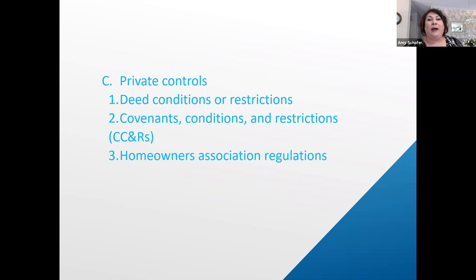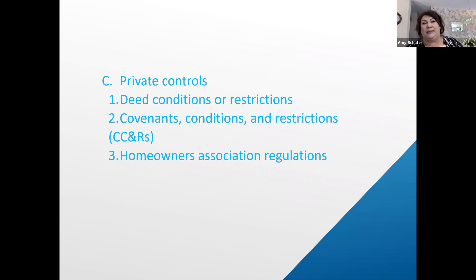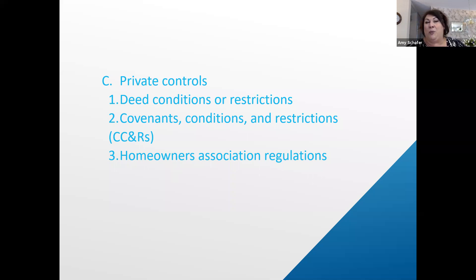Next up, we have private controls, and we've really hit this already with deed restrictions. Deed restrictions are different from building codes — building codes are set by your local municipality for safety. Deed restrictions and CC&Rs govern how you use the property and cover many architectural and style stipulations. Deed conditions and restrictions cannot single out people; that is a violation of the Fair Housing Act. It has to be about the property and how it's used. HOA stands for homeowners association — you may see that acronym. Covenants, conditions, and restrictions — CC&Rs — wraps up land use controls.